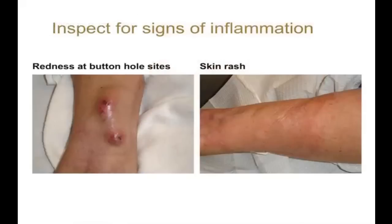Signs of inflammation — redness and rash over the fistula outflow tract — could suggest infection or inflammation. Early diagnosis can help prevent bacteremia and its associated catastrophic complications such as cellulitis and sepsis. The picture on the left shows angry red buttonhole sites suggestive of possible cellulitis; one should avoid cannulating the fistula through these buttonholes, and this needs to be treated appropriately before accessing the fistula for dialysis. The picture on the right shows a forearm with rash which could be from infection, local irritation, or allergies to skin disinfectant or tape.